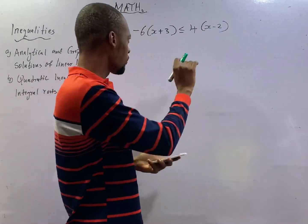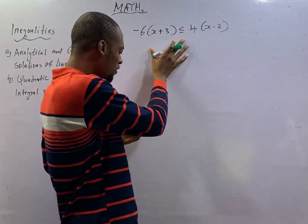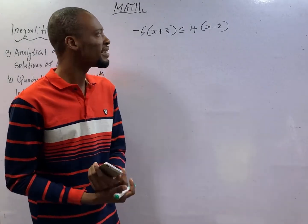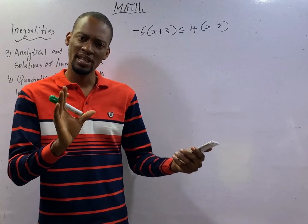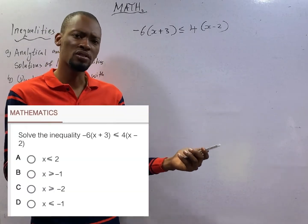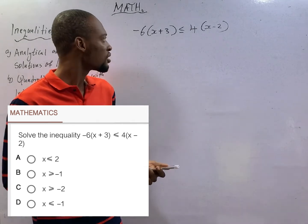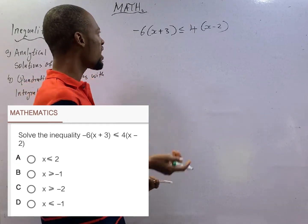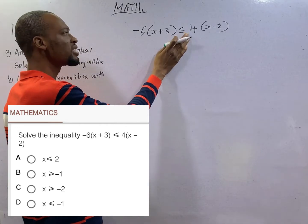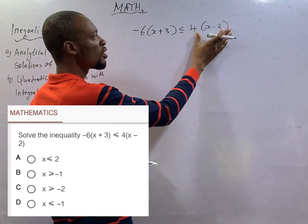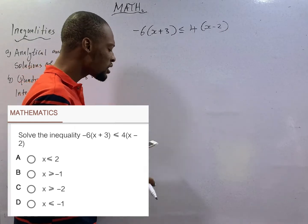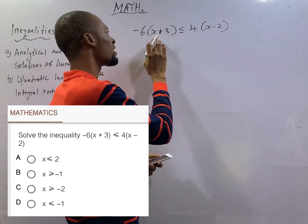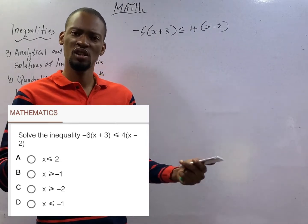The first question requires us to solve this inequality. And I told you, when you see an inequality question, the first thing that should come to your mind is, if this were to be an equation, how would I have gone about it? Once that thought enters, then you start. Here we have -6 with a bracket. If this is less than or equal to, you have 4 with a bracket. We are obviously looking for the value of x. Both x is inside the bracket. We therefore need to expand.